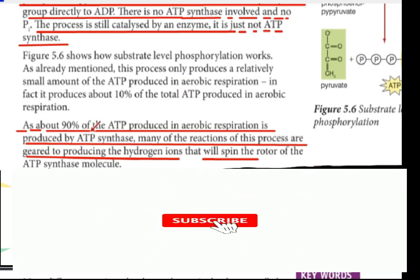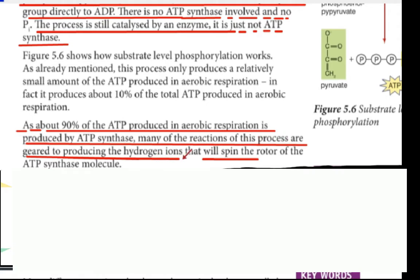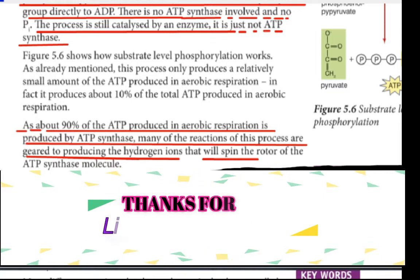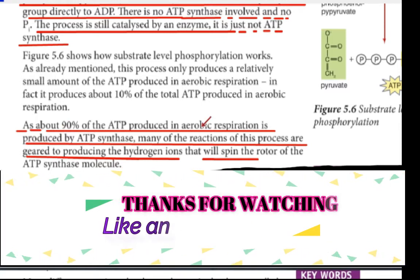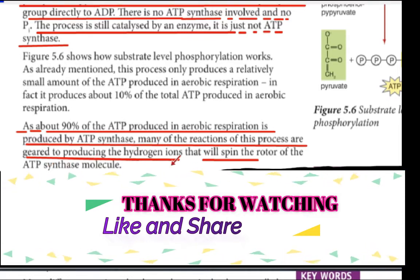About 90 percent of the ATP produced in aerobic respiration is produced by ATP synthase. Many of the reactions of this process are geared to produce hydrogen ions that will spin the rotor of the ATP synthase molecule.